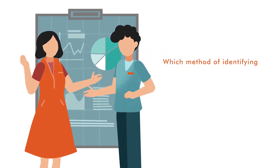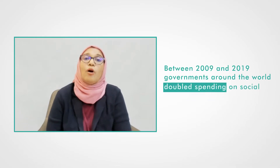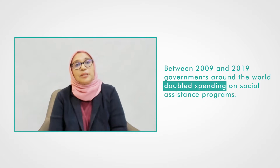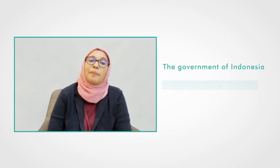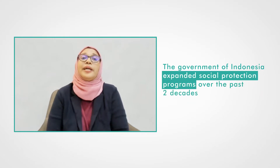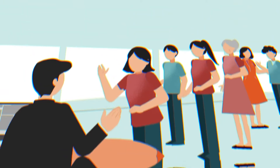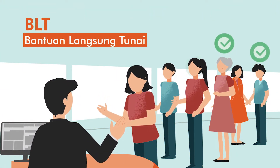In other words, people experiencing poverty can get excluded and middle or high-income families may benefit. This is why researchers conducted a study to understand which method of identifying low-income households is most effective. Between 2009 and 2019, governments from around the world doubled spending on social assistance programs. This was also evident in Indonesia, where the government expanded social protection programs over the past two decades.